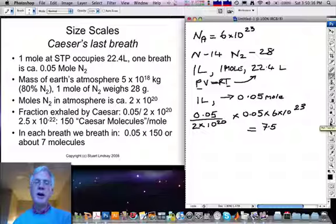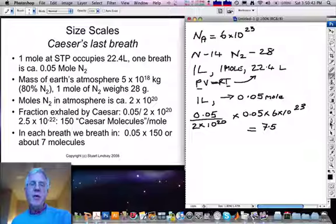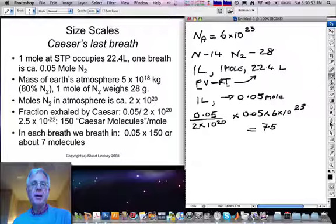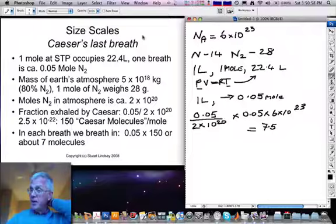So, roughly speaking, the ratio of the volume occupied by a few molecules to the air in our lungs is the same as the ratio of the volume occupied by one lungful of air to the entire volume of the Earth's atmosphere. So, that gives you some idea of just how small the atomic scale is.